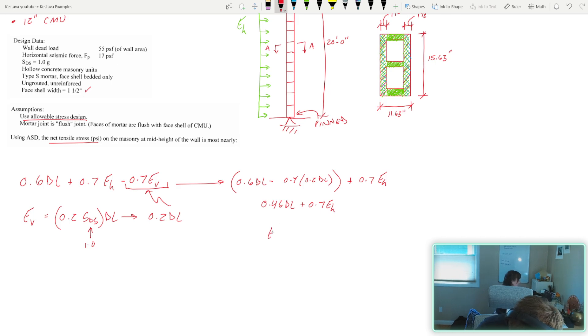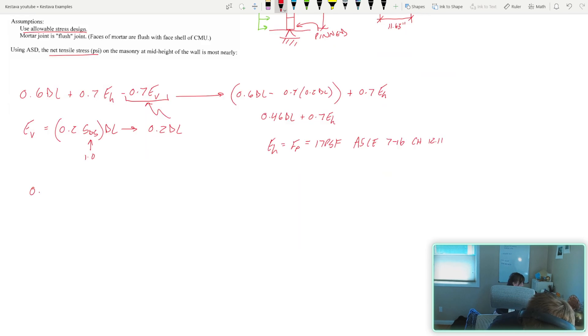For today's example, E sub H equals F sub P. F sub P is just another seismic force. And in this case, F sub P is the variable that's used for getting your out-of-plane loading due to seismic effects. So F sub P equals 17 PSF. If that wasn't given to us, you'd have to get the dead load of your wall and then head to ASCE 7-16, Chapter 12, 11, and use the equation there to get your F P force.